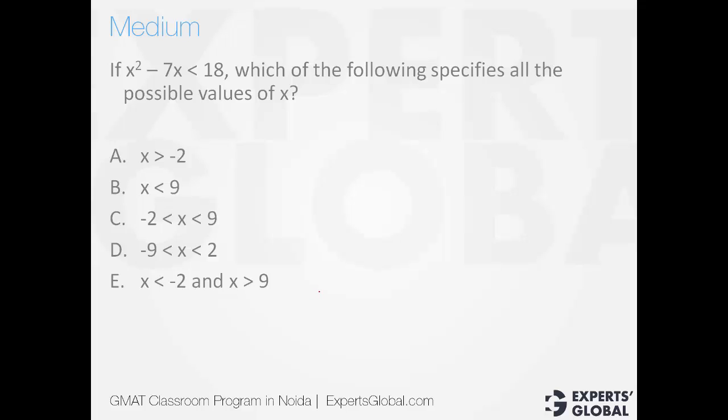Try applying this concept on this question. It's a medium difficulty level question. Once again, bring it all on one side, minus 18 is less than 0. Factorize, x square minus 9x plus 2x minus 18 is less than 0. Turns out to be x minus 9 into x plus 2 is less than 0.